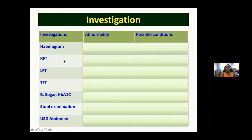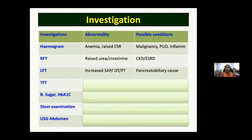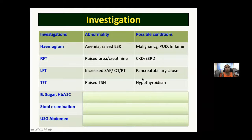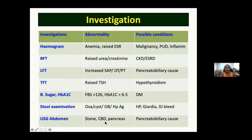As baseline investigations: a hemogram — anemia or raised ESR suggests blood loss, ulcer disease, malignancy, or inflammation; renal function tests for chronic kidney disease; liver function tests for pancreatic-biliary disease; thyroid function tests especially for hypothyroidism; blood sugars for diabetes; stool examination for ova, parasites, occult blood, and H. pylori antigen; and ultrasound for gallstones, CBD dilatation, and pancreatic lesions. A CT scan is warranted only when pancreatic disease is suspected.